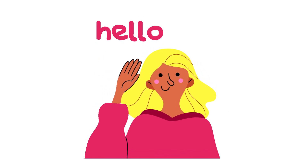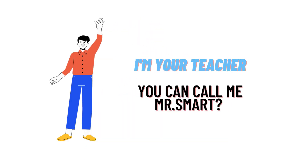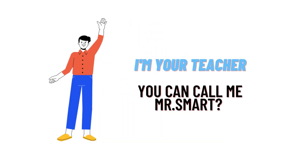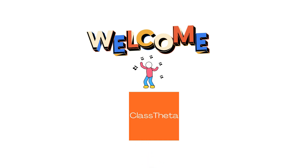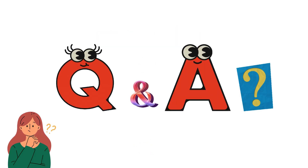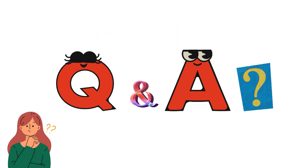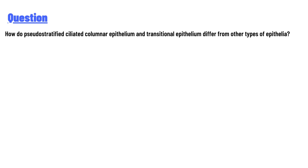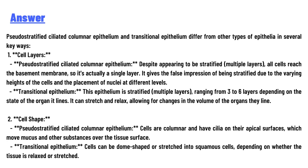Hello everyone, I am Akrash, your teacher. I welcome you on class twitter.com. Our today's question is: how do pseudostratified ciliated columnar epithelium and transitional epithelium differ from other types of epithelia?